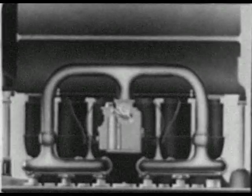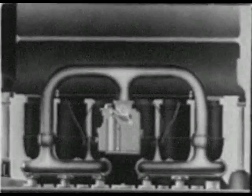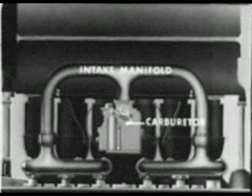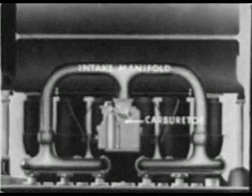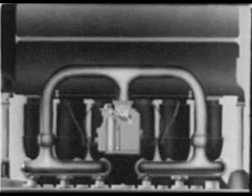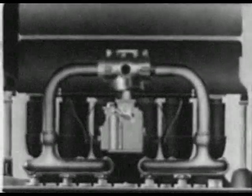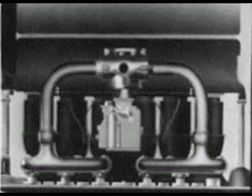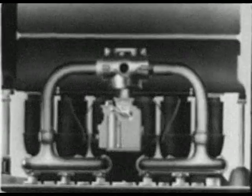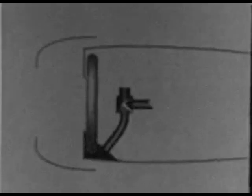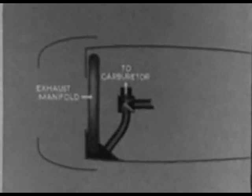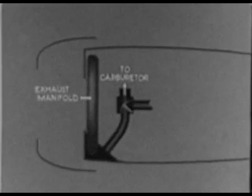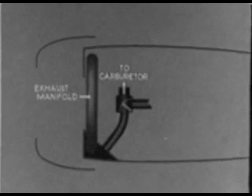The intake manifold arrangement on an inverted type of inline engine is here shown. In this model, the charge is heated by exhaust gases passed through a jacket which encloses part of the manifold. One modern design provides for heating of the air taken in as a means of preventing the formation of ice in a carburetor.